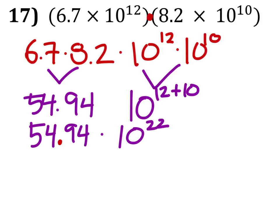But the decimal point is in the wrong place. It needs to be in front of the first non-zero number farthest to the left. That's 5.494.